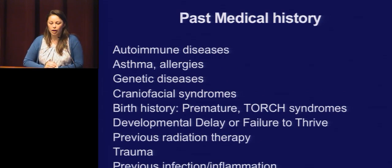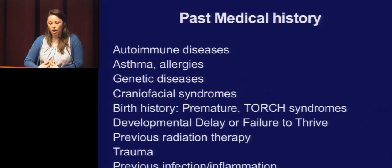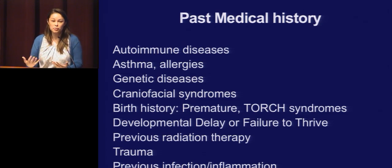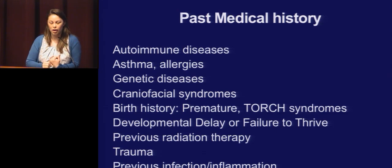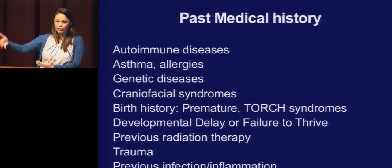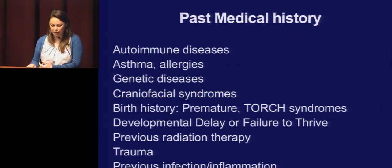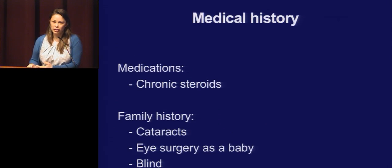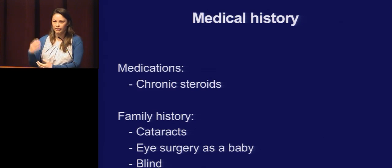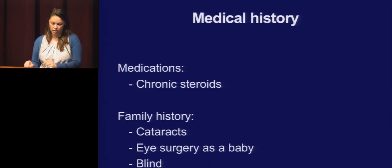You want to ask about past medical history — autoimmune disease, steroid use, genetic and craniofacial syndromes. Birth history is important in kids: were they premature? Did they have ROP with laser? TORCH syndrome? Failure to thrive? This will help determine your workup. Don't forget family history — ask about cataracts, surgery as a baby, unexplained blindness. Those details can come out when you really ask.